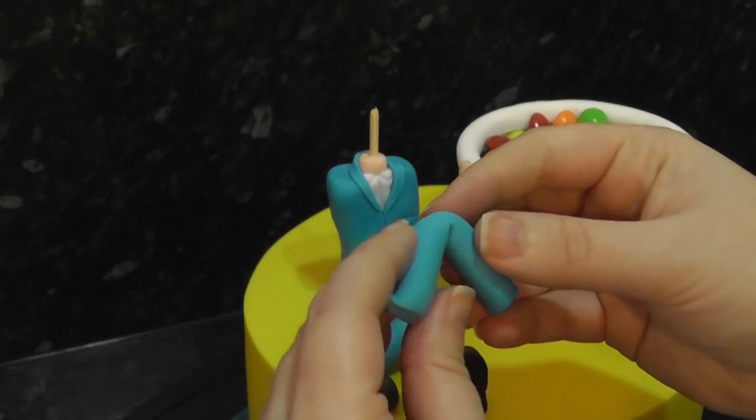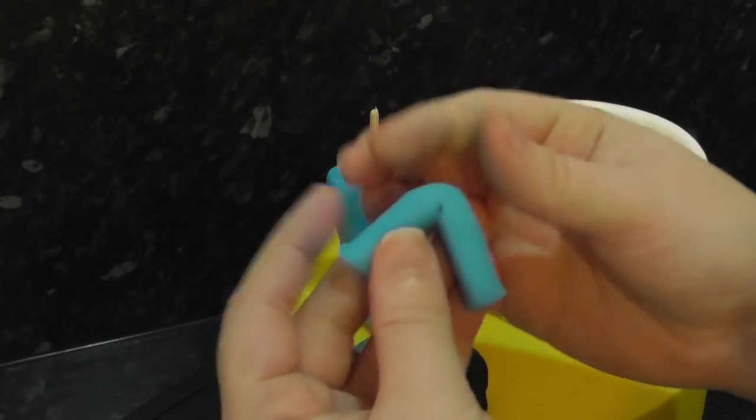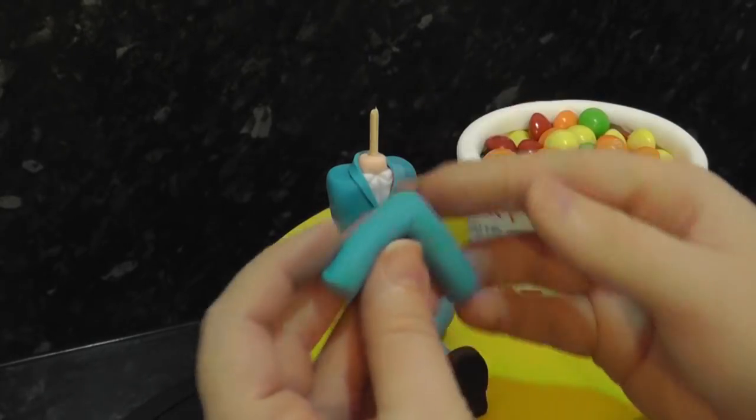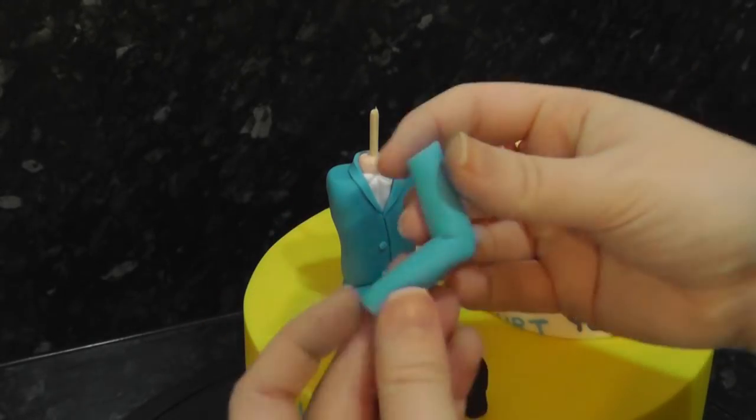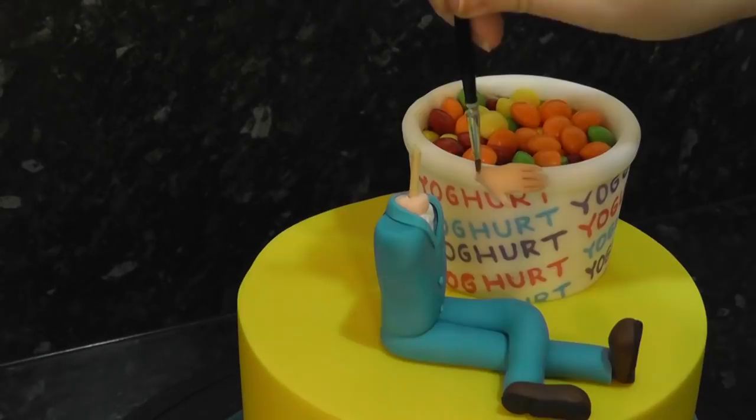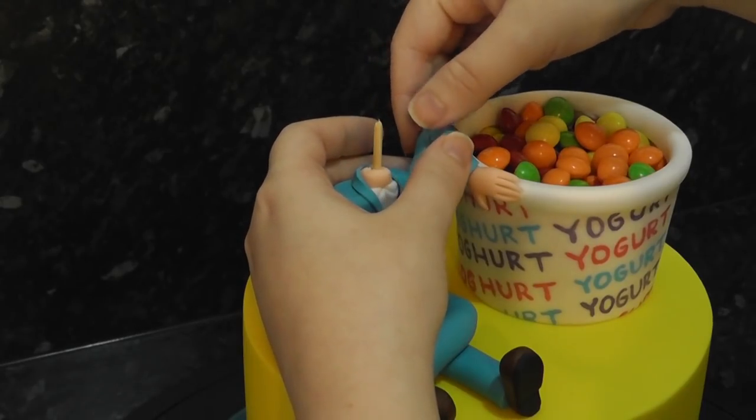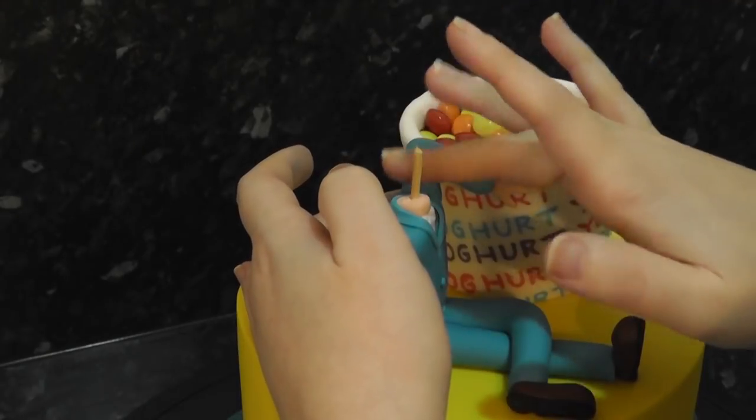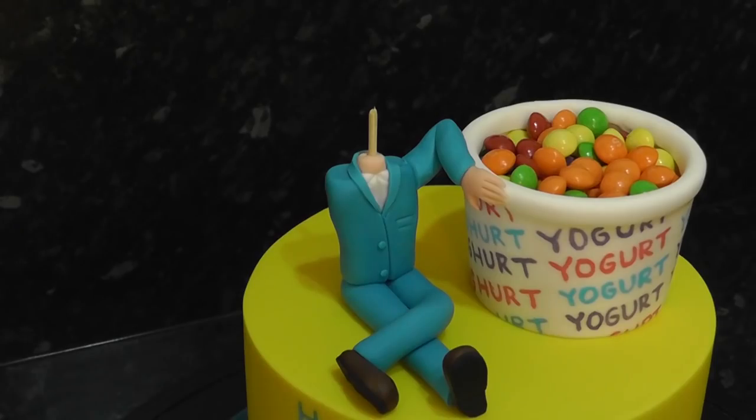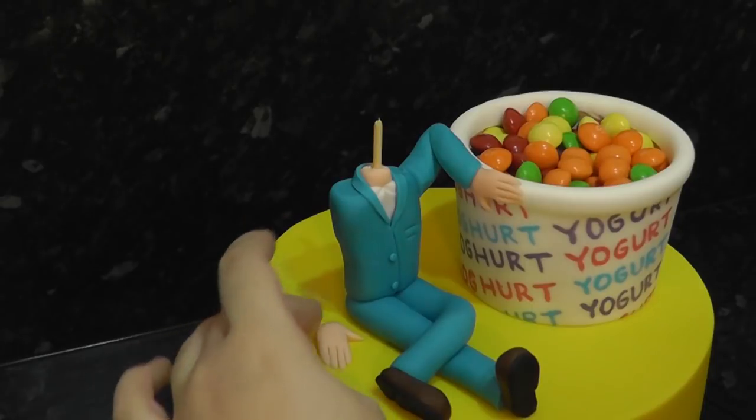This is a sausage of paste which you can bend by marking with the Dresden tool and pinching in an elbow. Join it to the hand and shoulder with water. Same thing goes for the other arm.